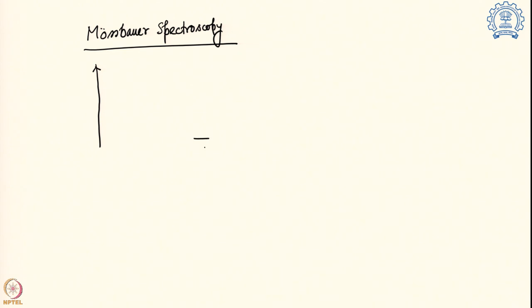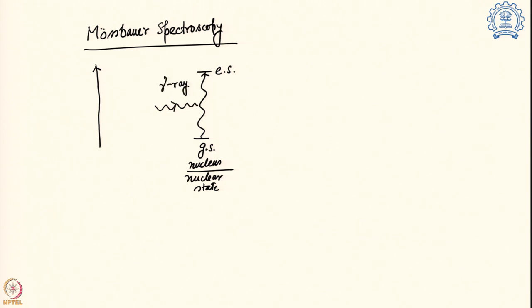In Mössbauer Spectroscopy, this is a spectroscopy where we change the ground state of a nucleus — it is a nuclear state we are talking about — and then we excite it to its particular excited state. As we are changing the nuclear state, the energies involved are very high for this particular transition, so we need transitions in the gamma ray region. We actually generate this energy by using another set where the excited state relaxes back to the ground state, and this is coming from a source.